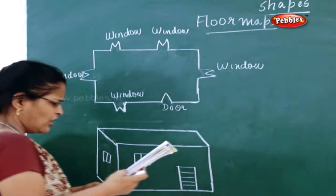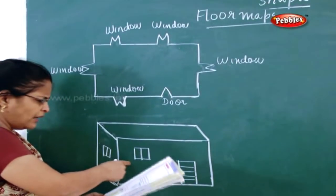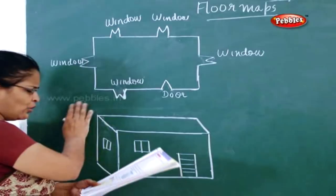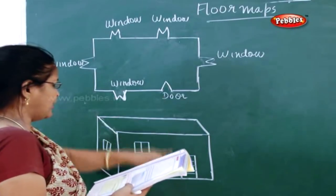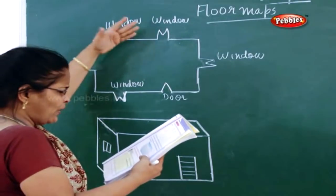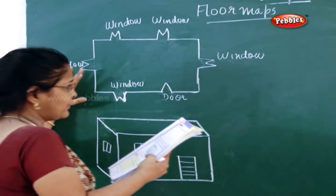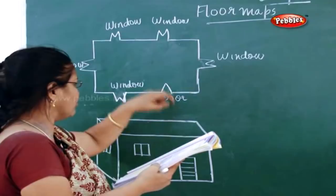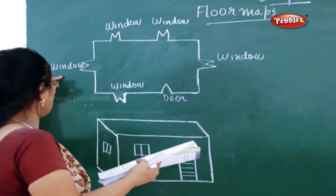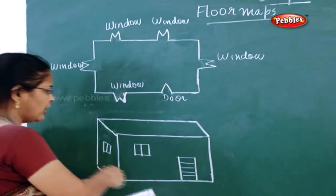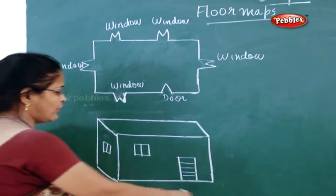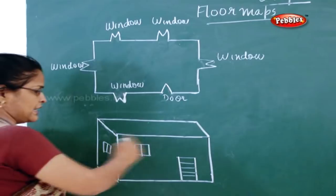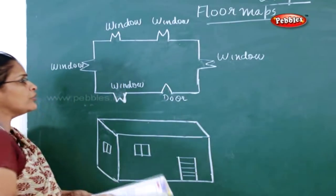This house has got one window and one door in the front, and two windows at the front. And two windows at the back, and one window on the left and one window on the right side of the house. This is the view of the house - one window, one door, and one window on the left hand side.